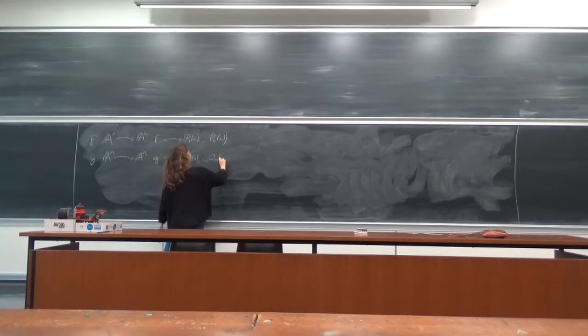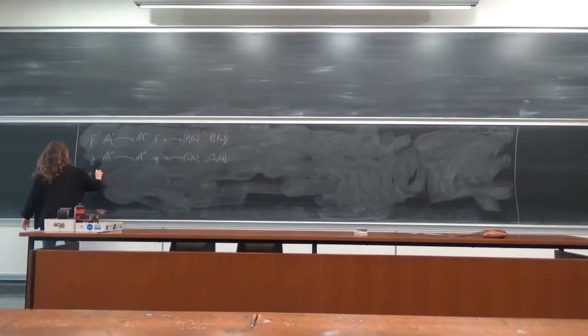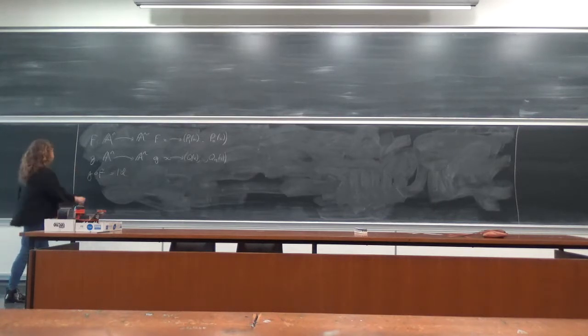Q1 of x to Qn of x, and what I have is that g times f is the identity.